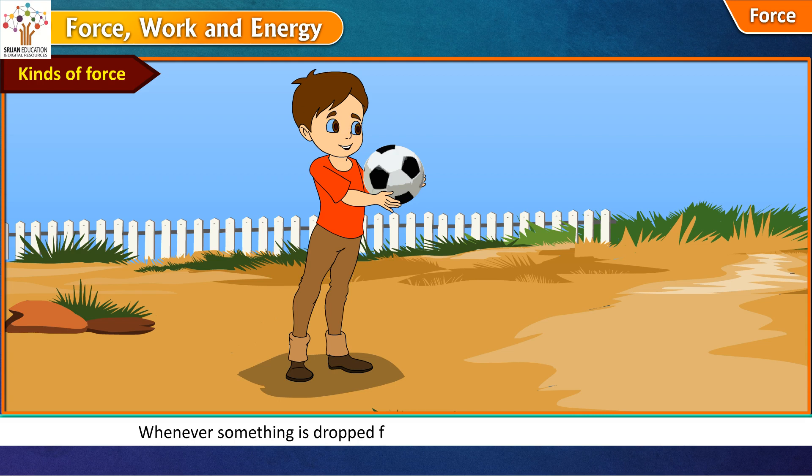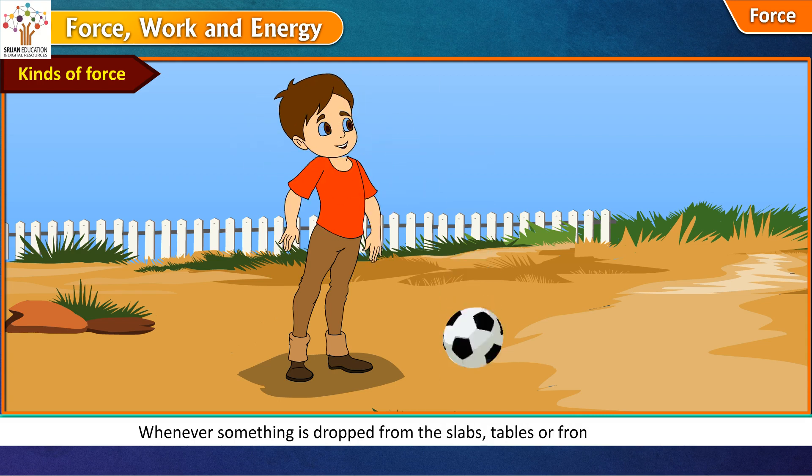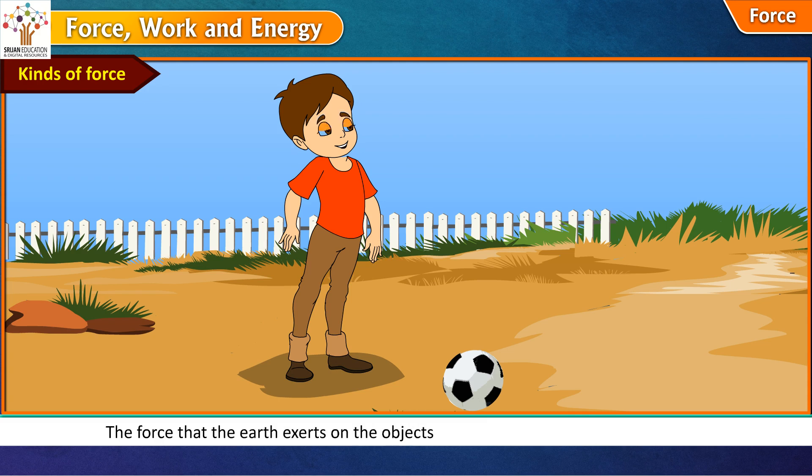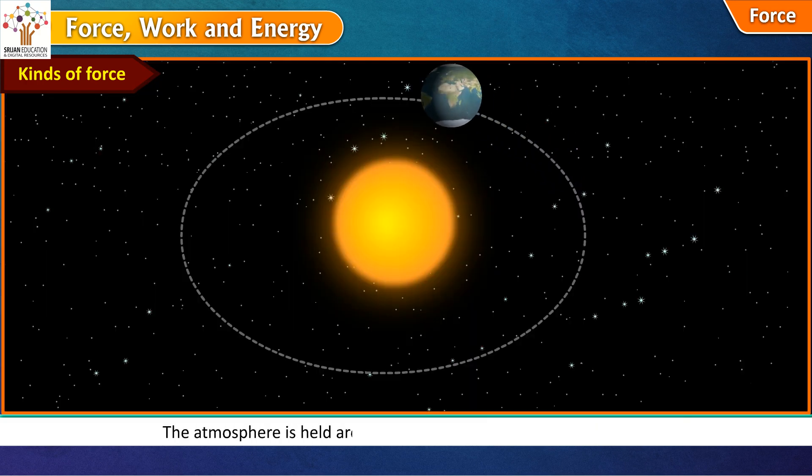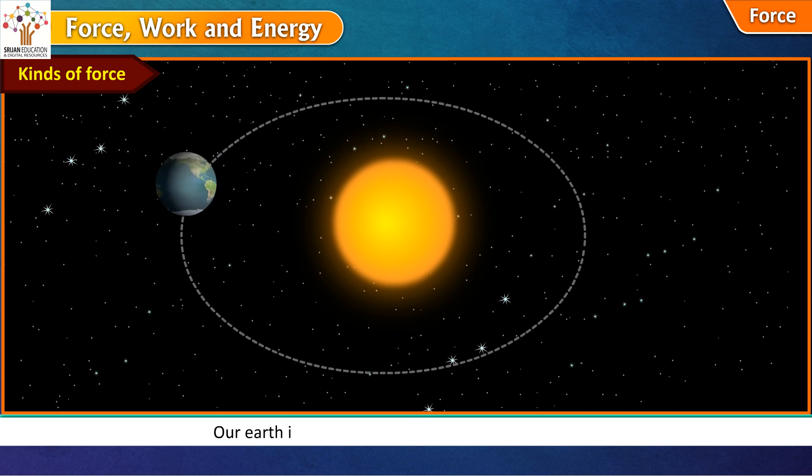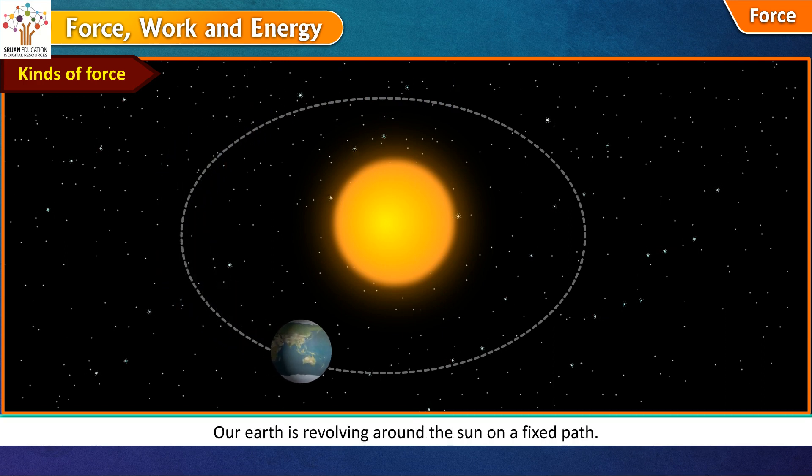Whenever something is dropped from the slabs, tables or from our hands, it always falls down on the ground. This is because the earth pulls them down. The force that the earth exerts on the objects is called gravitational force or gravity. The atmosphere is held around the earth due to gravitational force. Our earth is revolving around the sun on a fixed path. This is possible due to gravitational force between the earth and the sun.